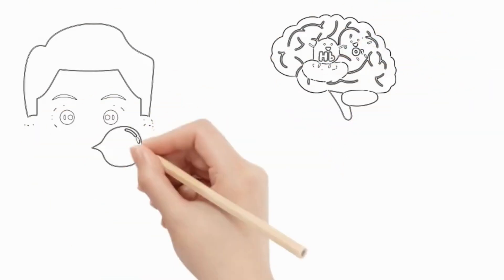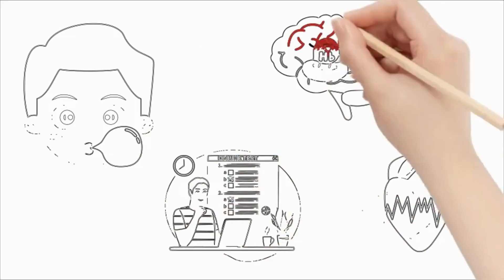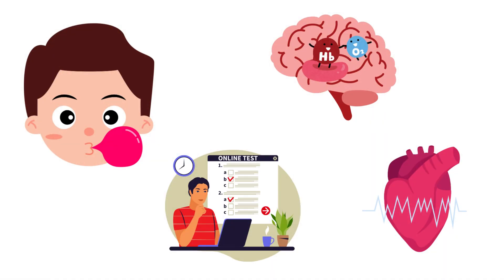Chewing gum increases oxygen supply to the brain, thereby enhancing concentration and attention. One study found that participants chewing gum during memory and learning tests had higher heart rates, resulting in increased oxygen supply to the brain.